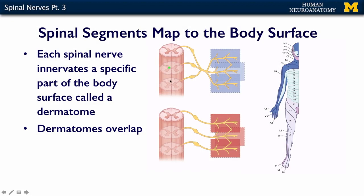And even when you have a plexus, as is depicted here, where the nerves come together and then separate again, it still results in a basic map on the body's surface, as can be seen in this little guy. So this is a depiction of all of the dermatomes and their body map on the surface of your body.